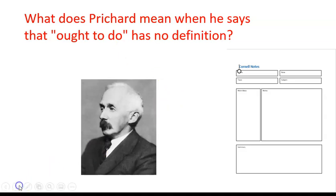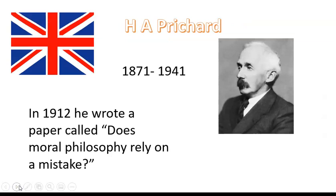A little bit of background about Pritchard: along with Moore, he was a British philosopher and his dates are 1871 to 1941, writing really in the 20th century, quite a bit between the two world wars. A really important paper of his is 'Does Moral Philosophy Rely on a Mistake?', written in 1912. Like Moore, he is challenging the very basis that moral philosophy is built upon — saying moral philosophers are asking the wrong kind of questions, indeed questions to which there is no answer. So like Moore, he's starting from a very similar starting point.